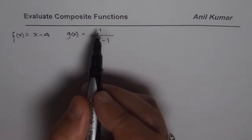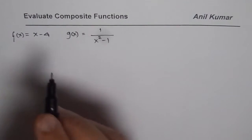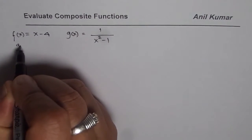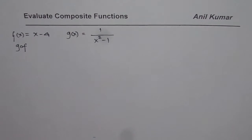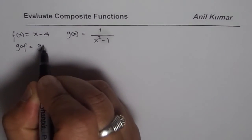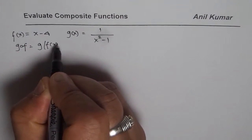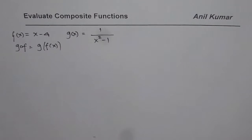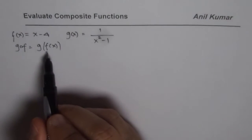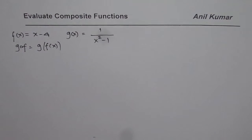When we say composite functions, one function is followed by the other. We will see what is g of f, which is one way of writing a composite function. It is also written as g of f of x. So this function f of x is composed with function g.